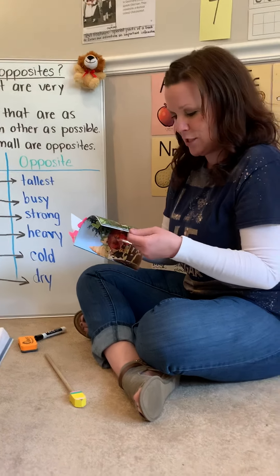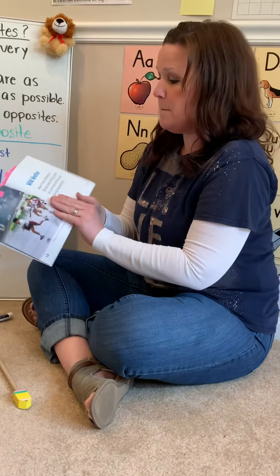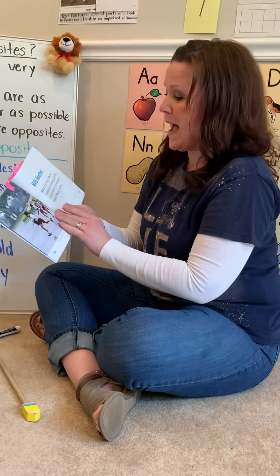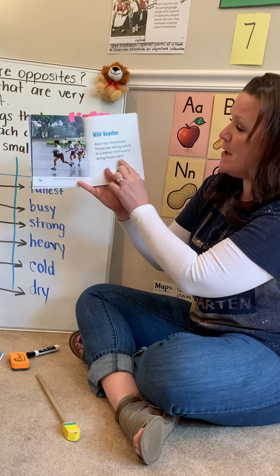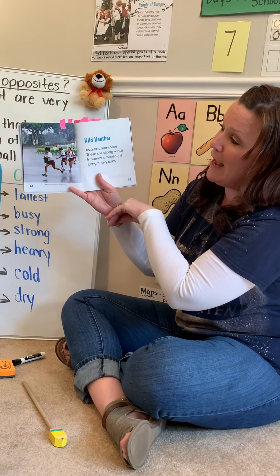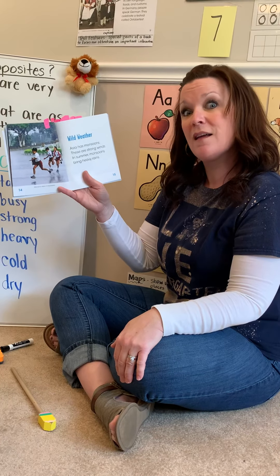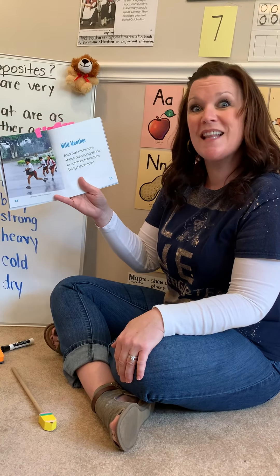Let's look at page 14 for another example. The next sentence says, in summer, monsoons bring heavy rains. You can see the rain coming down very heavy here. What's the opposite of heavy? It's light. So if the rain is not heavy, it's light. Light, heavy — I think you're going to know what the opposite of this next one is.